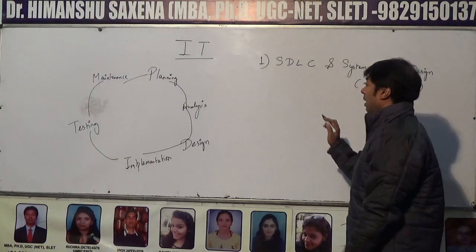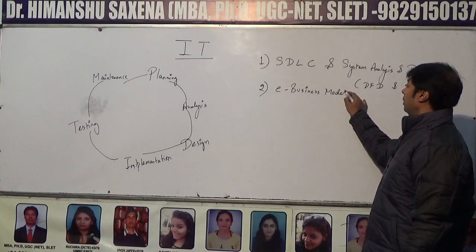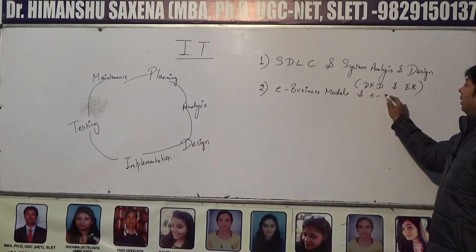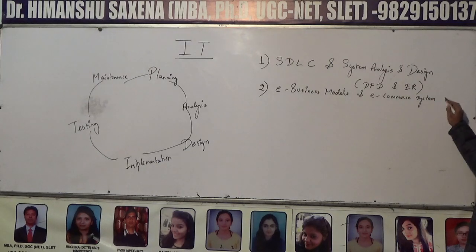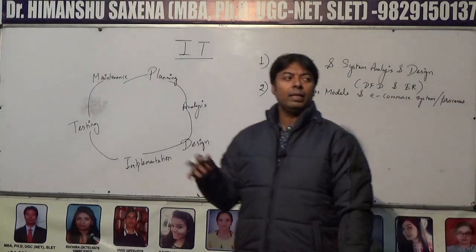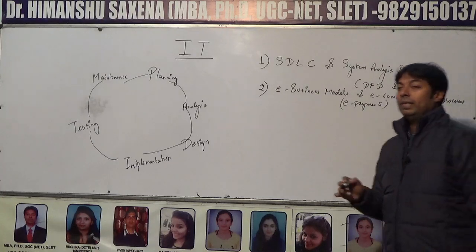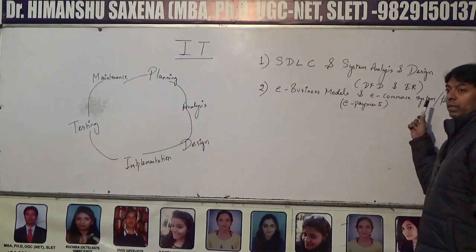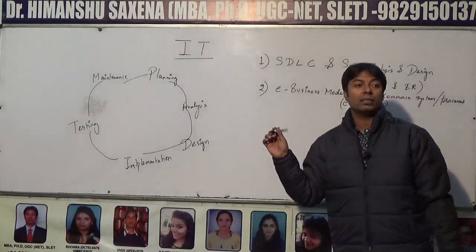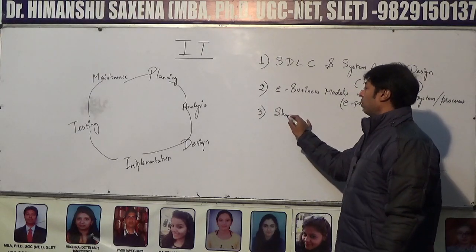Next comes e-business models and e-commerce systems and processes. E-commerce is getting tremendous importance these days, and so are e-payments — electronic payments, internet banking, net banking, plastic money, debit cards, credit cards, and payment apps. All the e-payment processes are also very important as far as e-commerce systems and processes are concerned.